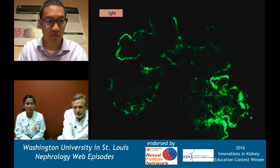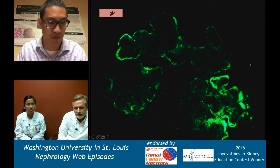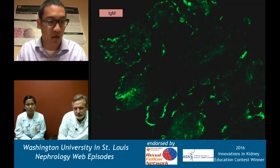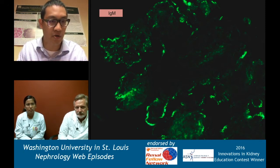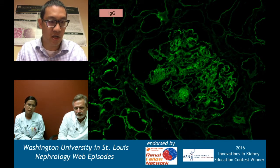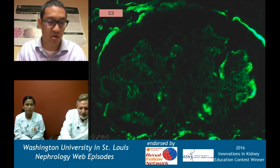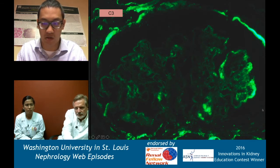Let's look at some immunofluorescence. IgM was positive in the capillary loops — a coarse granular appearance. IgA, IgG, and C3 were also positive. So this is definitely immune complex mediated capillary loop staining.